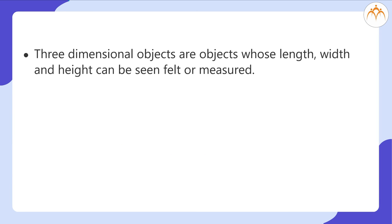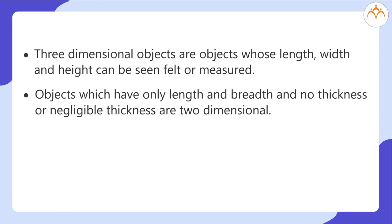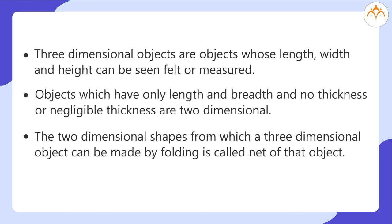What did we learn? Three-dimensional objects are objects whose length, width and height can be seen, felt or measured. Objects which have only length and breadth and no thickness or negligible thickness are two-dimensional. The two-dimensional shapes from which a three-dimensional object can be made by folding is called the net of that object.